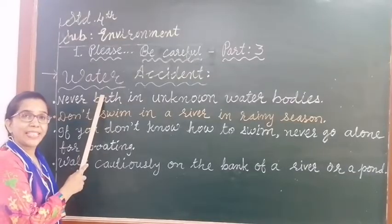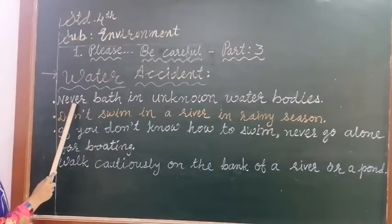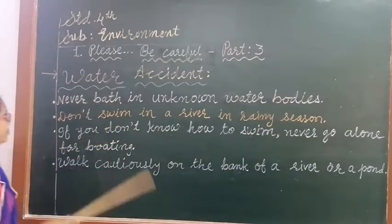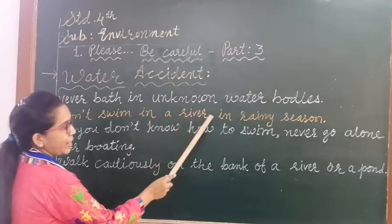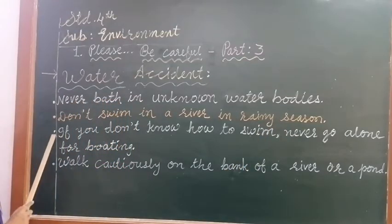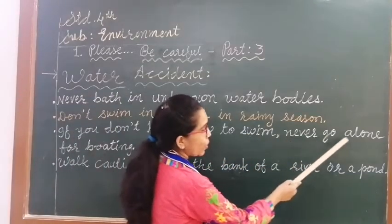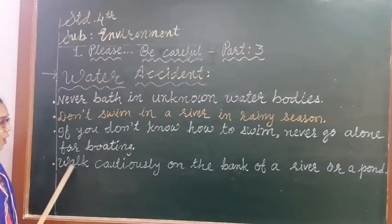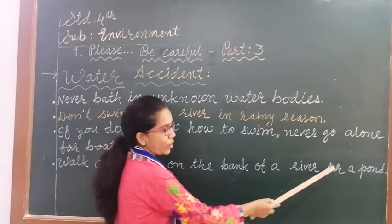Now let's see prevention of water accidents. First point: Never pass through unknown water bodies. Second point: Don't swim in a river during rainy season. Third point: If you don't know how to swim, never go alone for boating. Fourth point: Walk cautiously on the bank of a river or a pond.